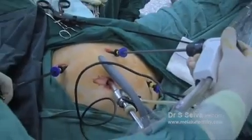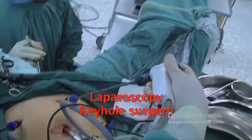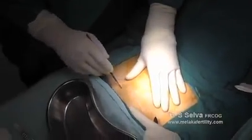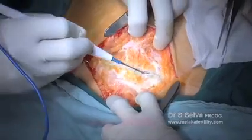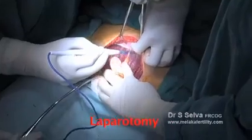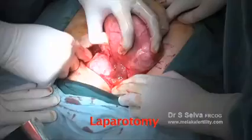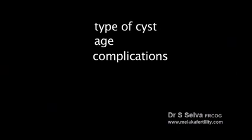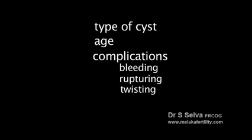Most cysts can be removed by laparoscopic or keyhole surgery. Some cysts, especially if cancer is suspected, may require a laparotomy. The type of operation depends on factors such as the type of cyst, the age, complications encountered such as bleeding, rupturing and twisting of the cyst, and whether cancer is suspected or to be ruled out.